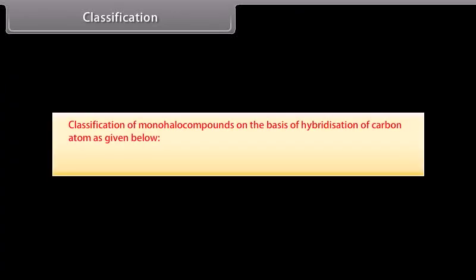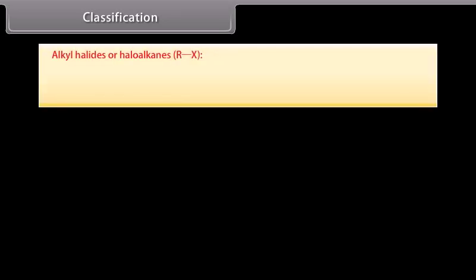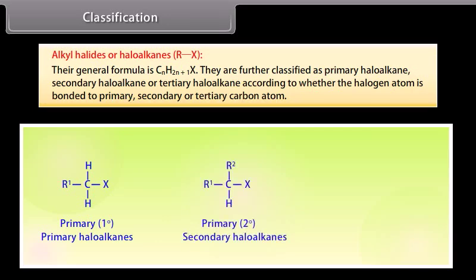Classification of mono-halo compounds on the basis of hybridization of carbon atom as given below. Halogen compounds in which halogen is bonded to sp3 hybridized carbon. Alkyl halides or haloalkanes are RX. Their general formula is CnH2n+1X. They are further classified as primary haloalkane, secondary haloalkane, or tertiary haloalkane according to whether the halogen atom is bonded to primary, secondary, or tertiary carbon atom.